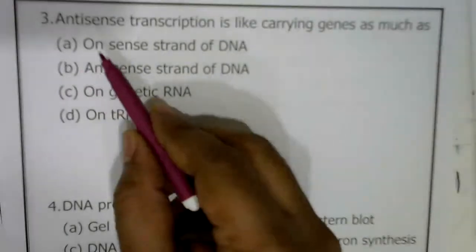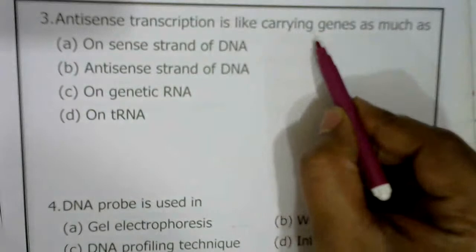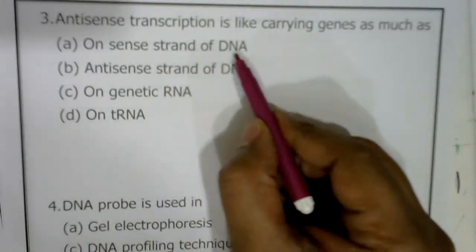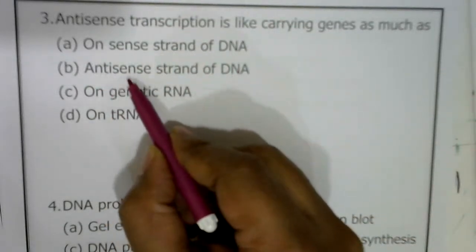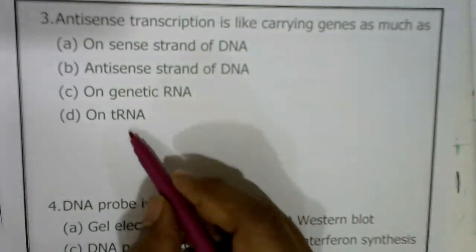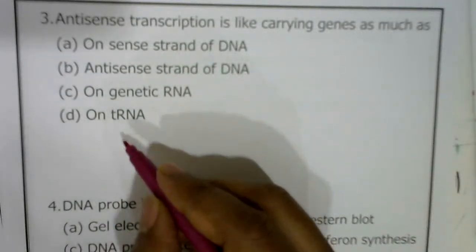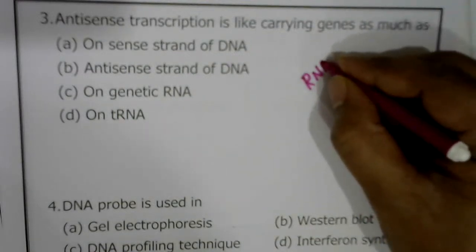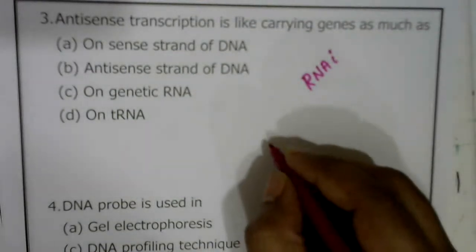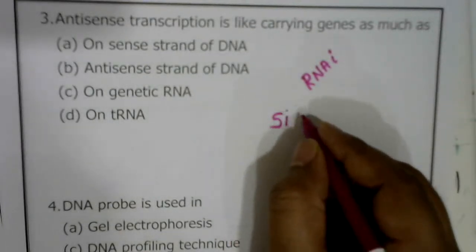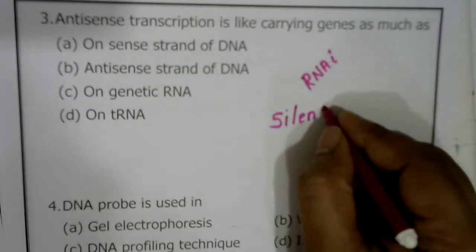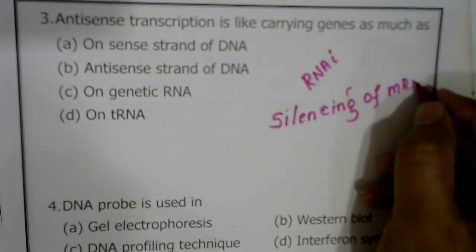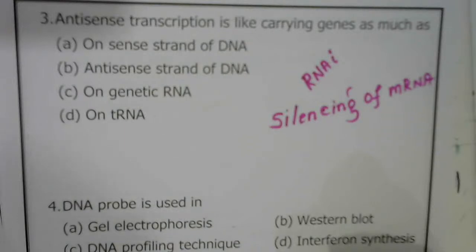Question three on antisense transcription: the options include sense strand of DNA, antisense strand of DNA, genetic RNA, or tRNA. This question is related to the concept of RNA interference, also called the silencing of mRNA. This mRNA silencing method is used for production of pest-resistant tobacco plants.